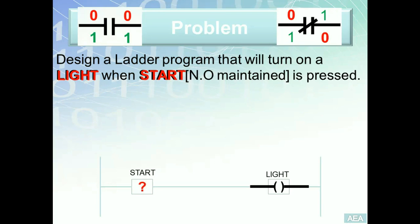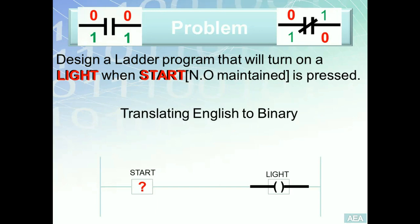The real question is: which instruction are we going to use for Start — XIC or XIO? I need you to follow the systematic approach to determine which instruction to use. Please do not guess. The method I'm going to demonstrate I like to call 'Translate English to Binary.' I'm going to read the problem again and highlight the terms that represent the states of the inputs and outputs, then translate them from English into binary zeros and ones.